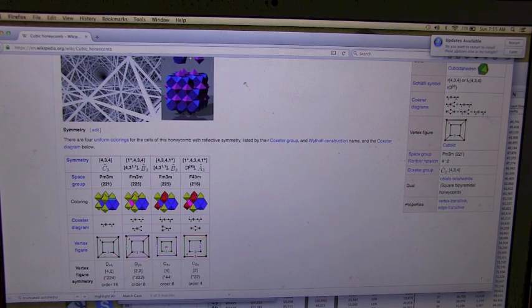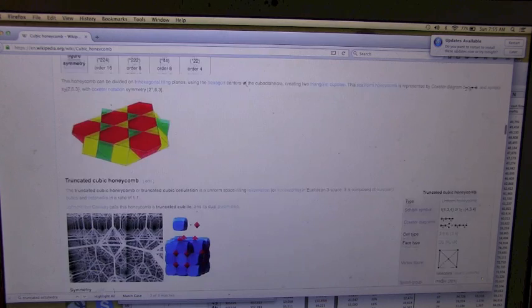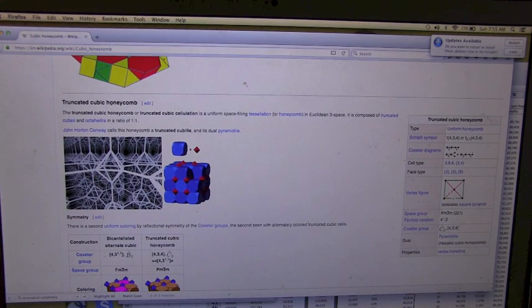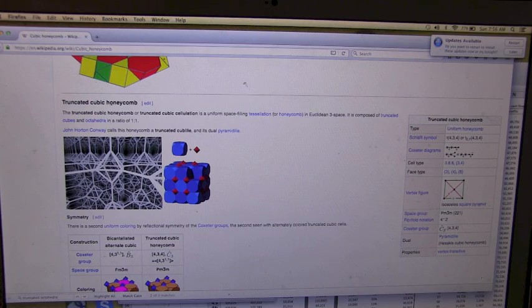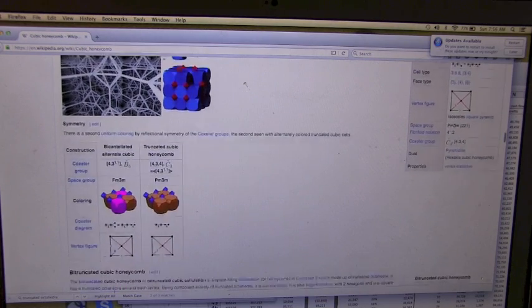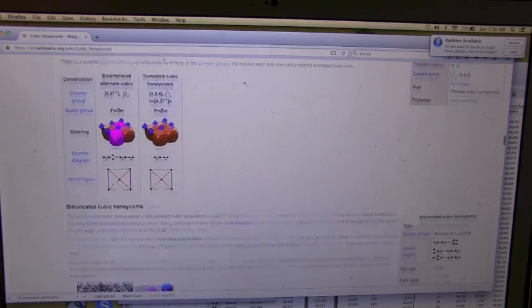Octahedrons? So it looks like there's a tiling with octahedrons. Yep. It's a truncated cubic honeycomb. There's some cubes truncated. So now you have cubes with their corners cut off and then filling in the gaps with octahedrons. Oh, cool. That's actually pretty neat. That's sort of what we were doing. We had a shape and then we were filling in the rest with cubes. Yeah.